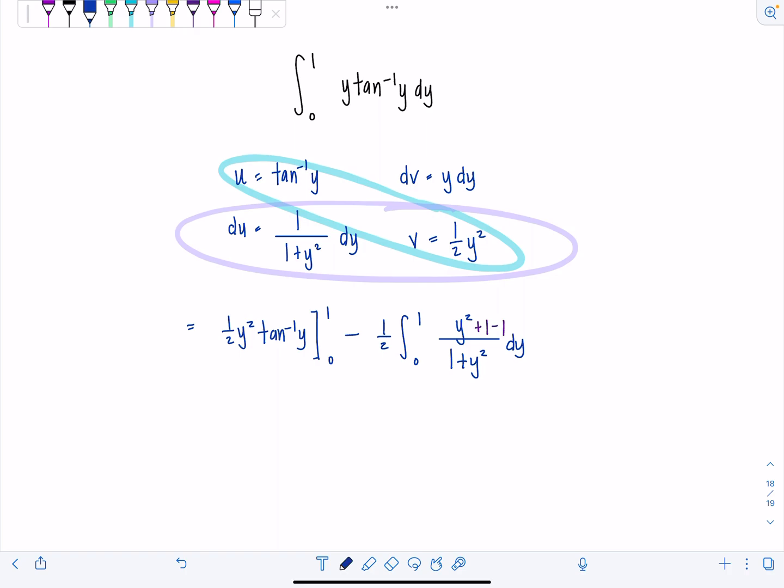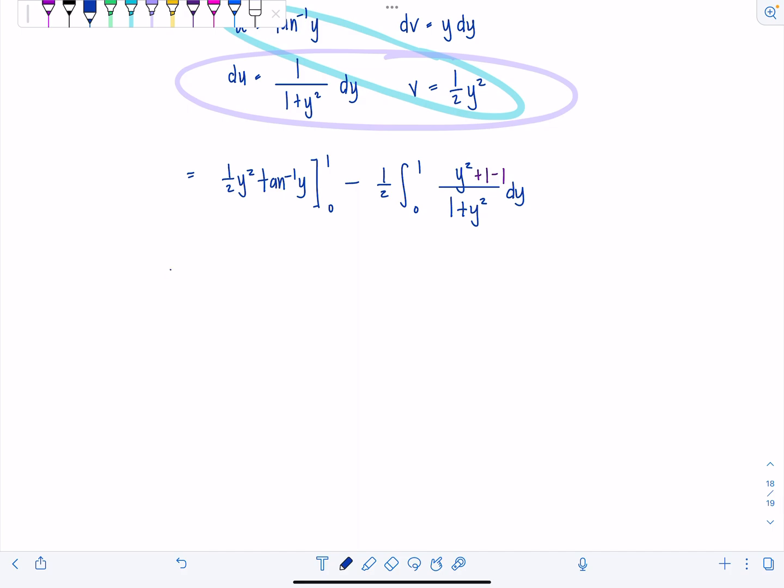Watch what that's going to let me do. So scooting down, rewrite everything every step of the way. Don't be sloppy and don't be lazy. That's just not how math works. So 1 half times definite integral from 0 to 1.